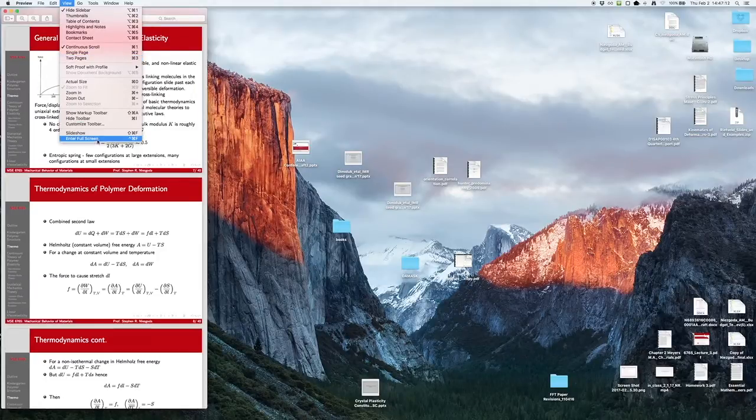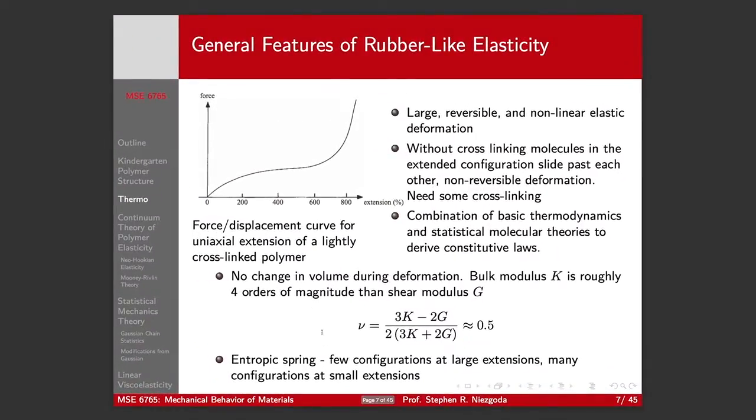If we look here and make our shear modulus very small, we end up with a Poisson's ratio of about one-half.